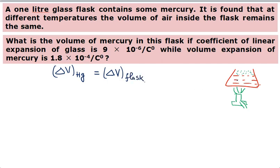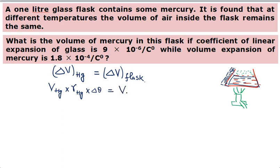Understand this carefully: the mercury expands in its portion, and the flask expands everywhere — including the air space — but air volume doesn't change as per the question. So that space is also occupied by mercury. We just need to equate volumes. So: change in volume of mercury = volume of mercury × gamma of mercury × rise in temperature = total volume of flask × gamma of flask × rise in temperature.